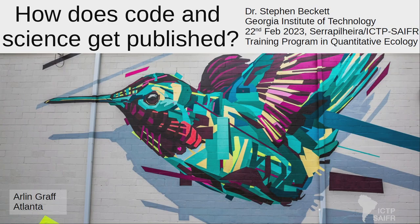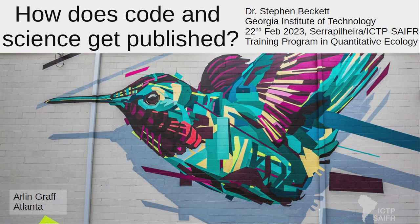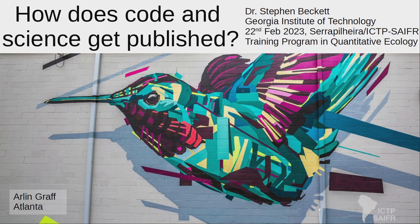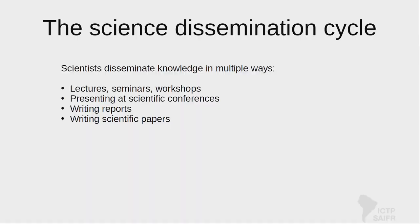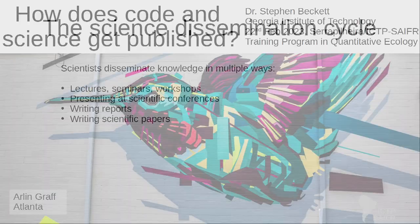I want to talk about how you might publish code and how the scientific publishing process works in general. I want to get into motivations first and get at the idea of what it means to publish and why publish.